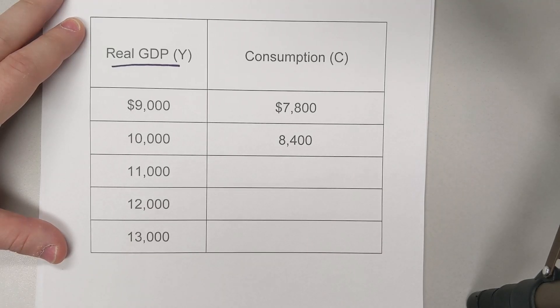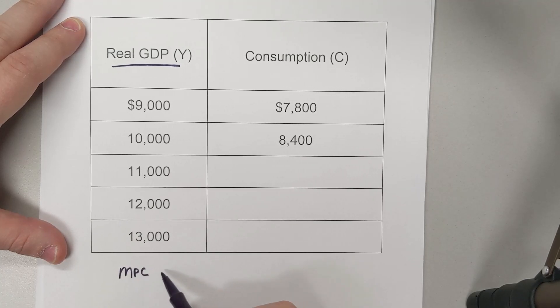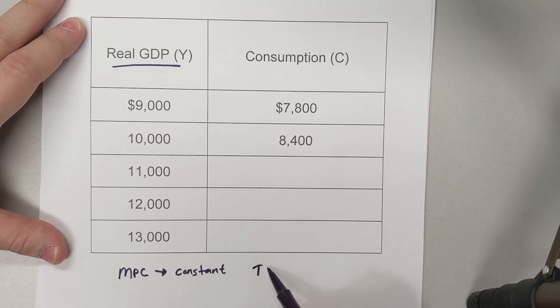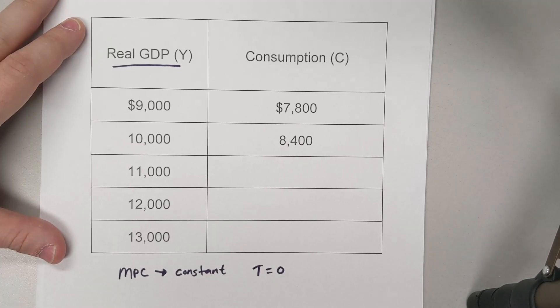There were two assumptions made for this example. One, your marginal propensity to consume is going to be constant throughout, and two, taxes are equal to zero, so we don't have to worry about that changing.